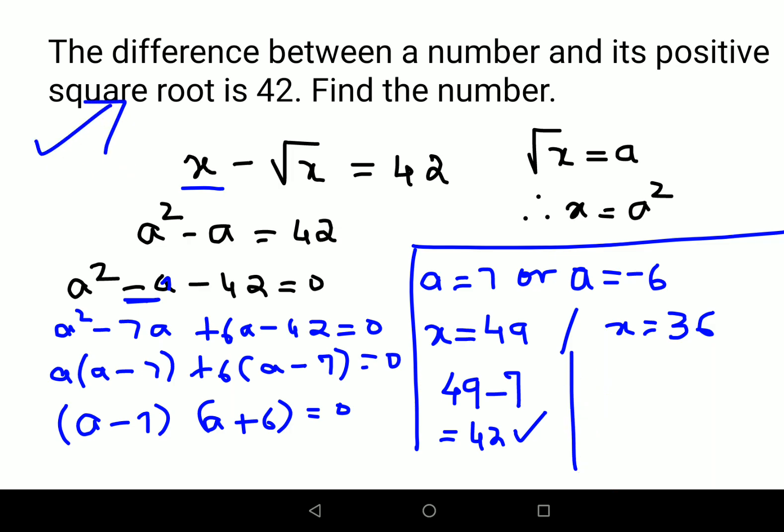Now let's look at 36. We will do 36 minus its positive square root which is 6. The answer comes out to be 30. So I can completely disregard this particular solution. Therefore the number for this particular question is 49.